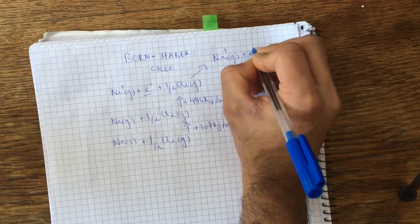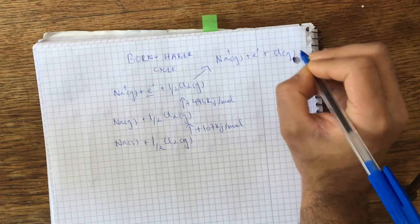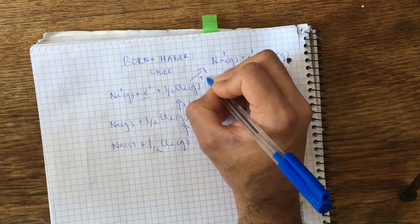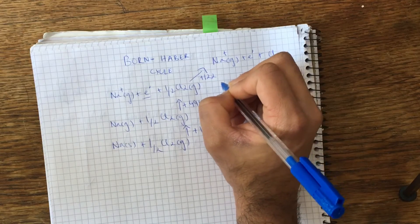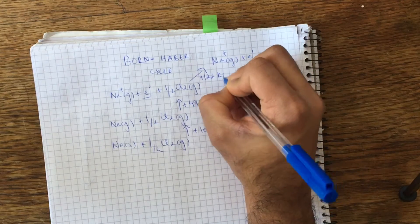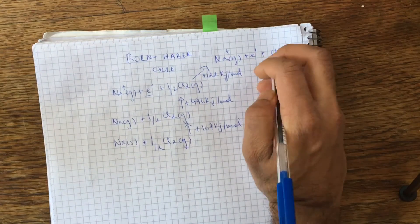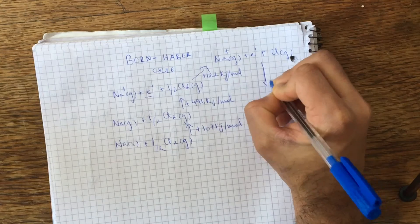And this energy of atomization is 122 kilojoules per mole for chlorine. And now we need to convert chlorine to chloride ions.